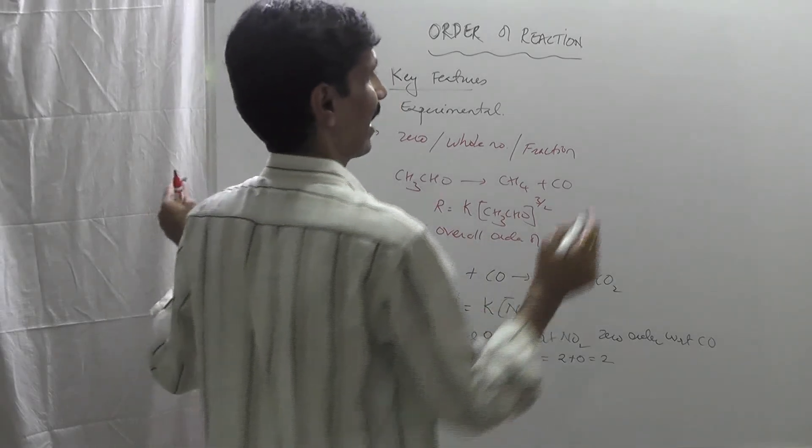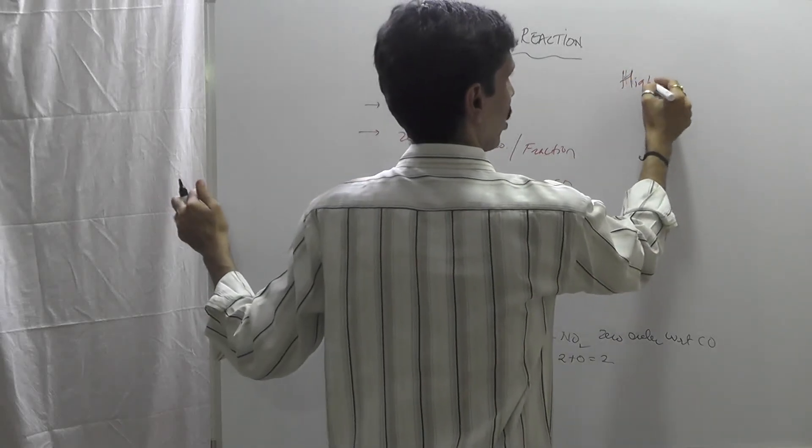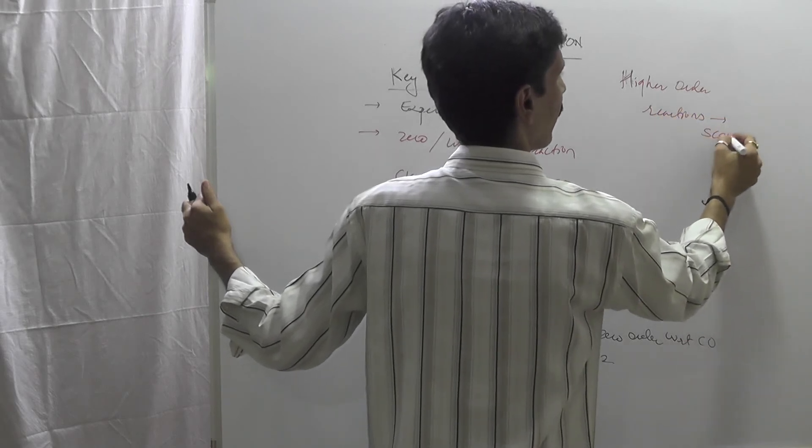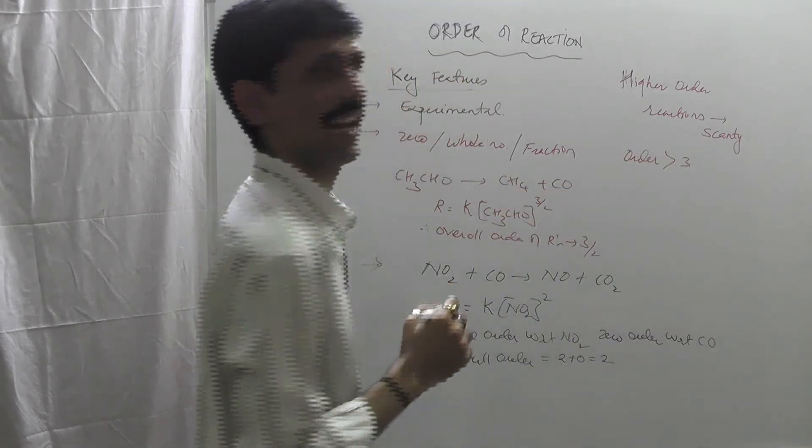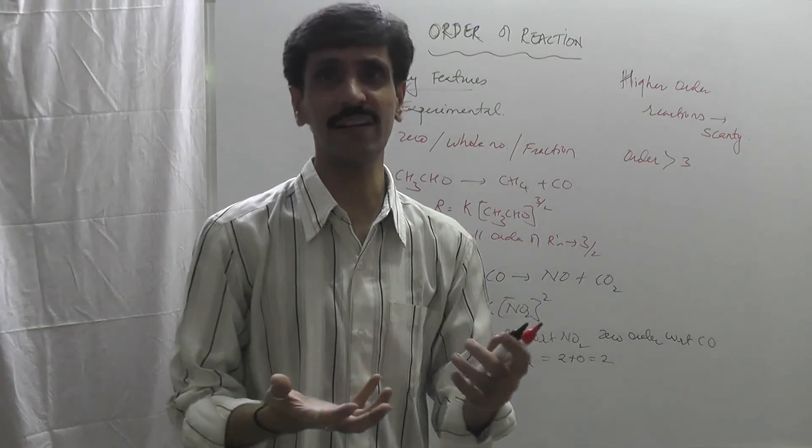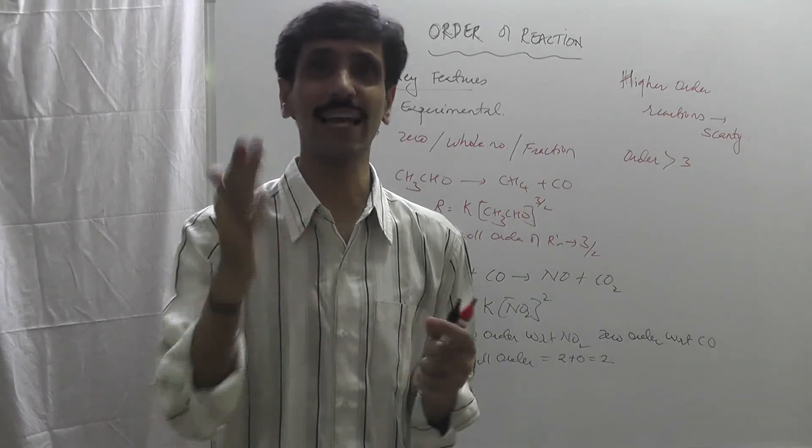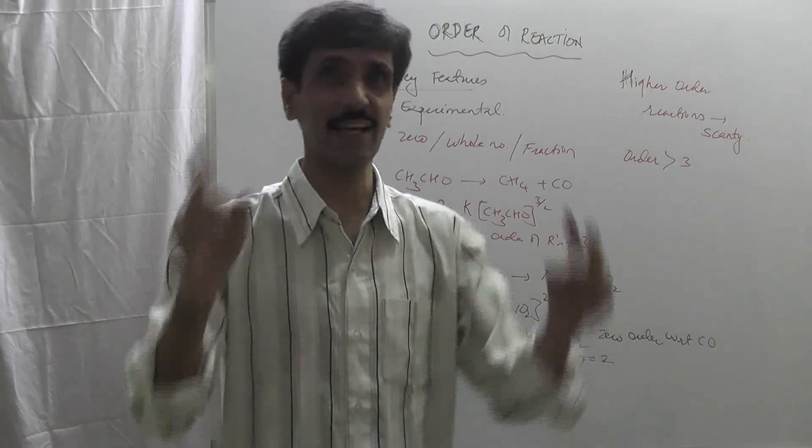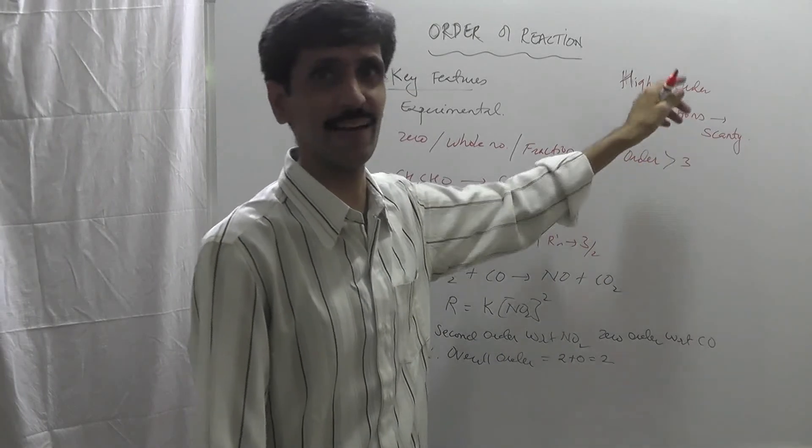Next one is generally what has been seen is that higher order reactions are very few. They are very scanty. And the order with, say, greater than 3, they are very less. Because in this case what happens is if there are too many of the reactants involved in that particular reaction, obviously the efficiency of that particular reaction will decrease. We go into the elementary reactions and all that stuff, I'll explain you in the later part of the chapter. But generally remember, when I talk about overall order of the reaction, we say that greater than 3 is going to be less. Higher order reactions are less.